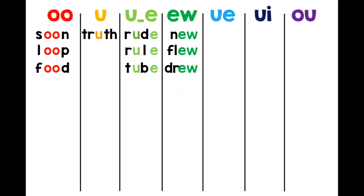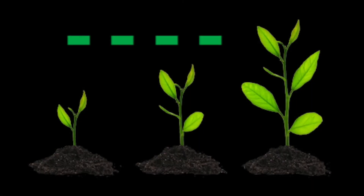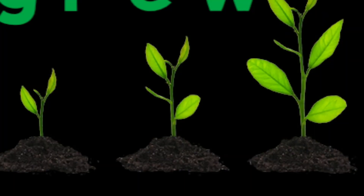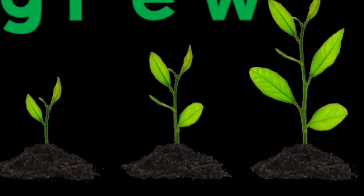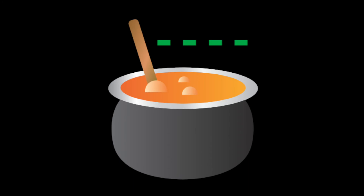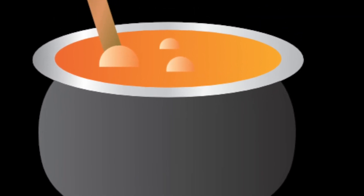Now I will show you some pictures. See if you can spell the word that matches the picture. Here comes round three. Grew. The plant grew from the ground. Check your work. Did you get this one right? Stew. I made a warm pot of stew. Check your spelling. Was this one easy?